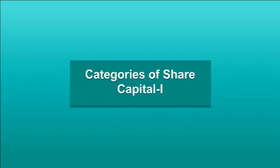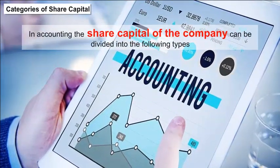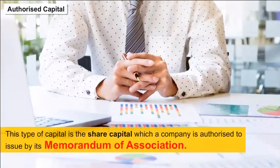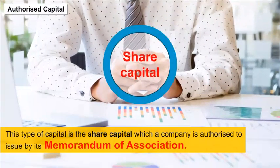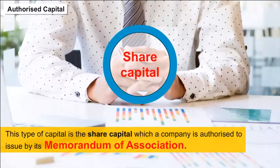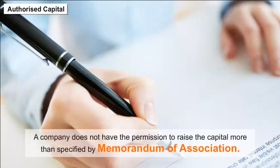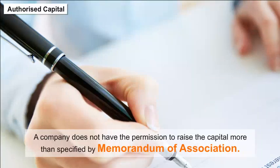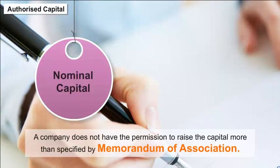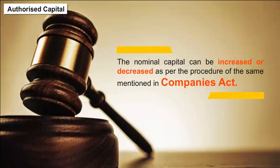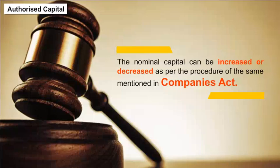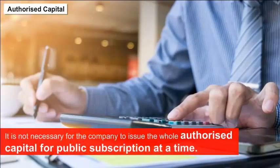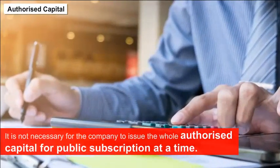Categories of Share Capital: In accounting, the share capital of a company can be divided into several types. Authorised Capital: This is the share capital which a company is authorized to issue by its memorandum of association. A company cannot raise capital beyond the amount specified in its memorandum. It is also called nominal capital or registered capital, and can be increased or decreased as per the procedure mentioned in the Companies Act.